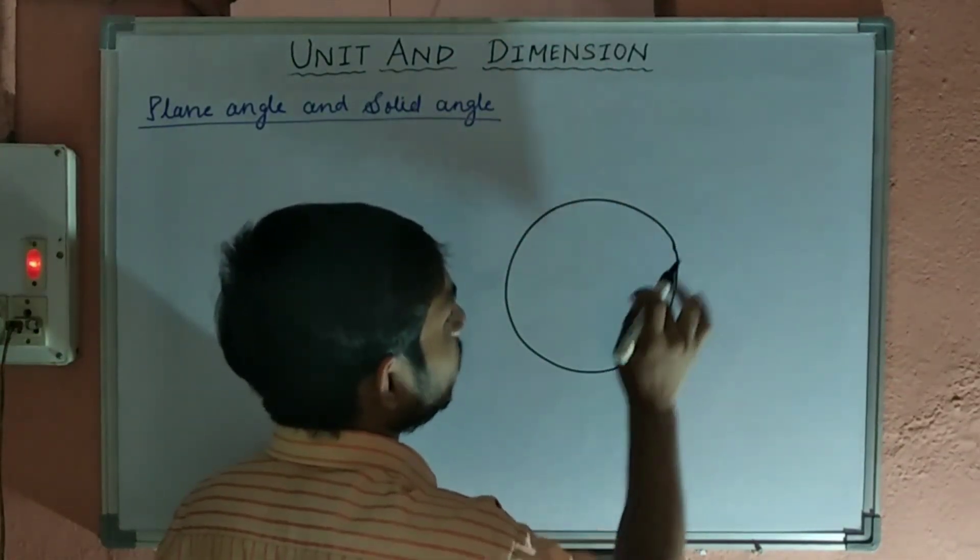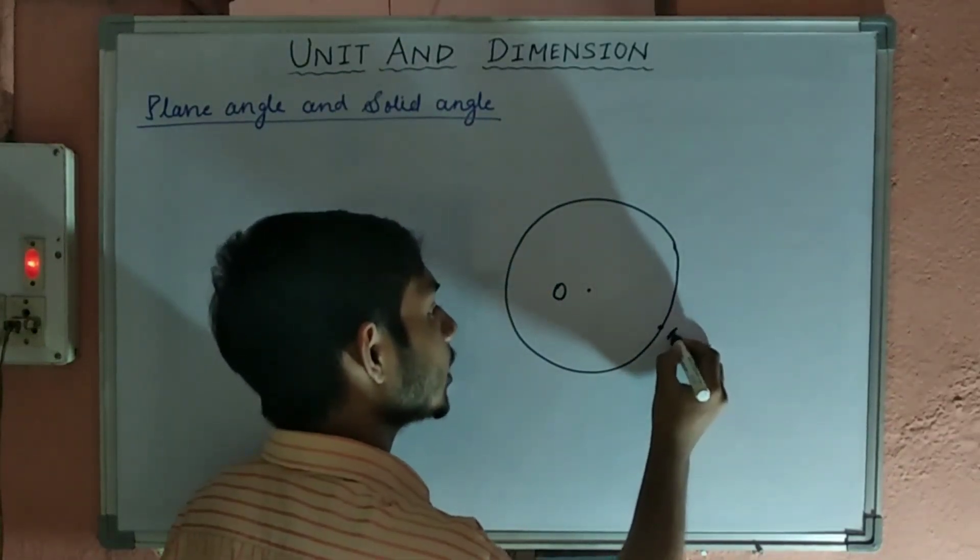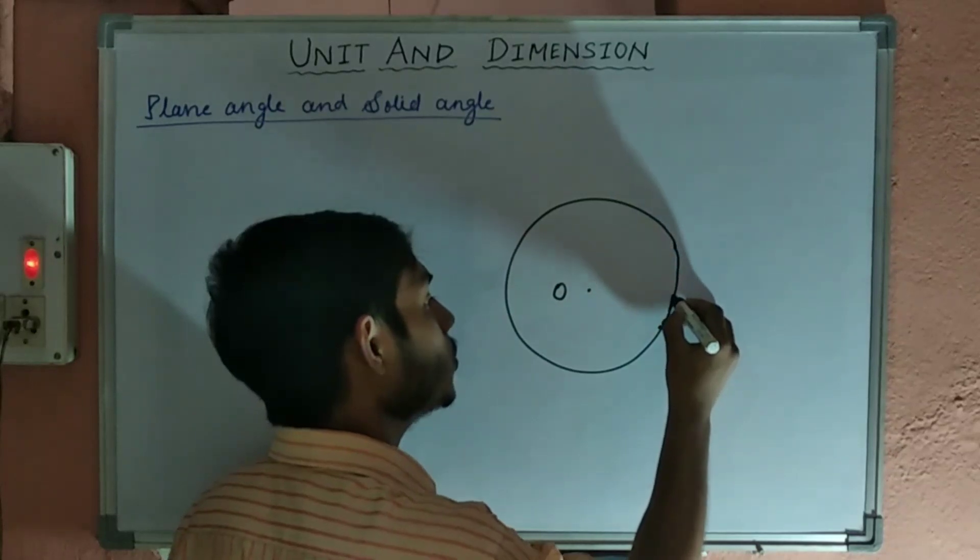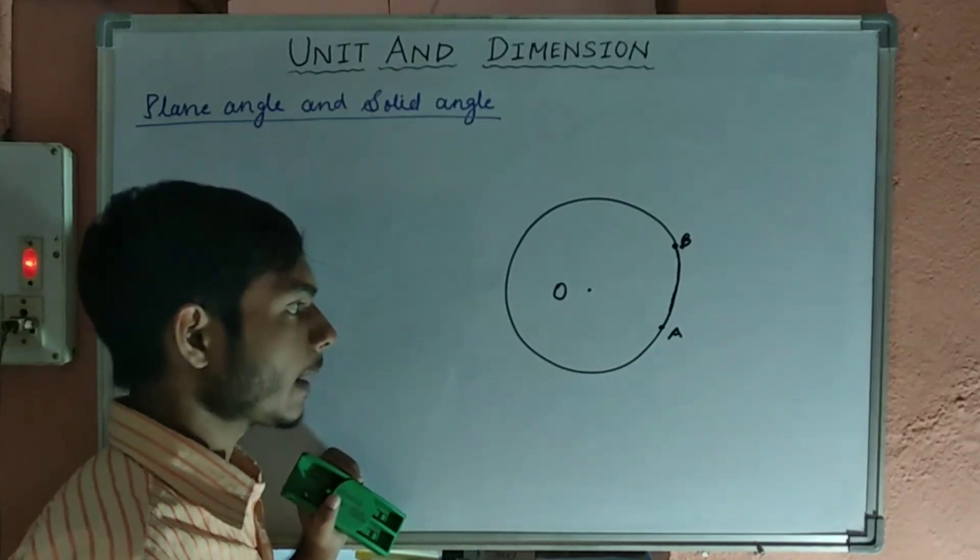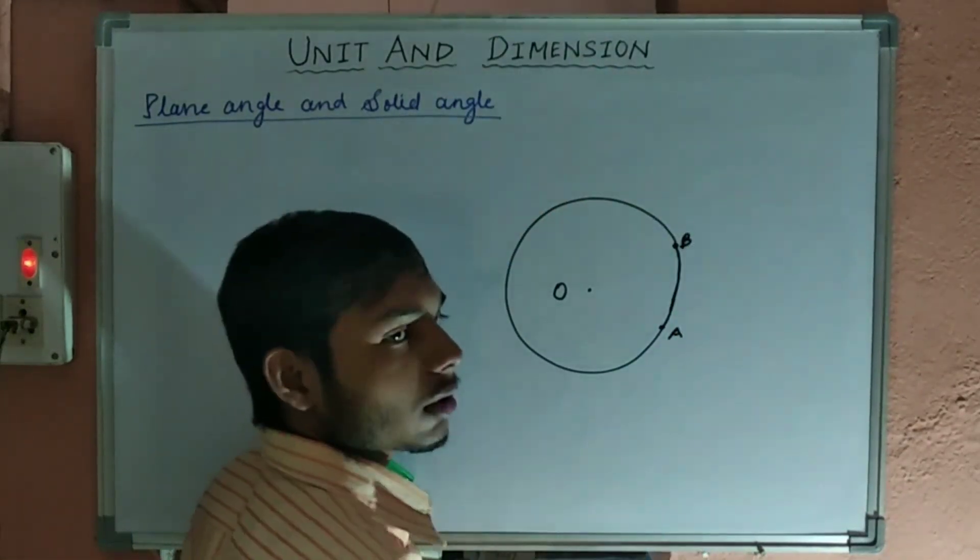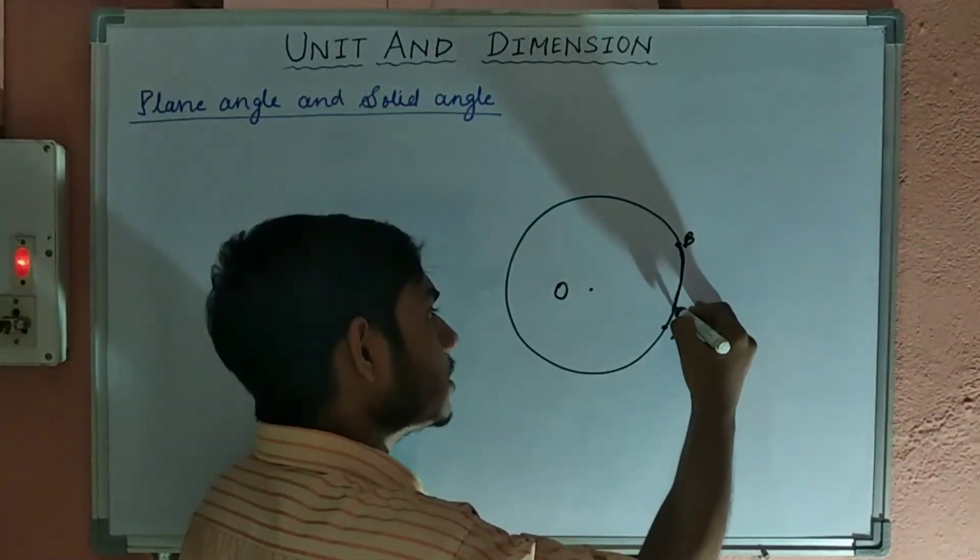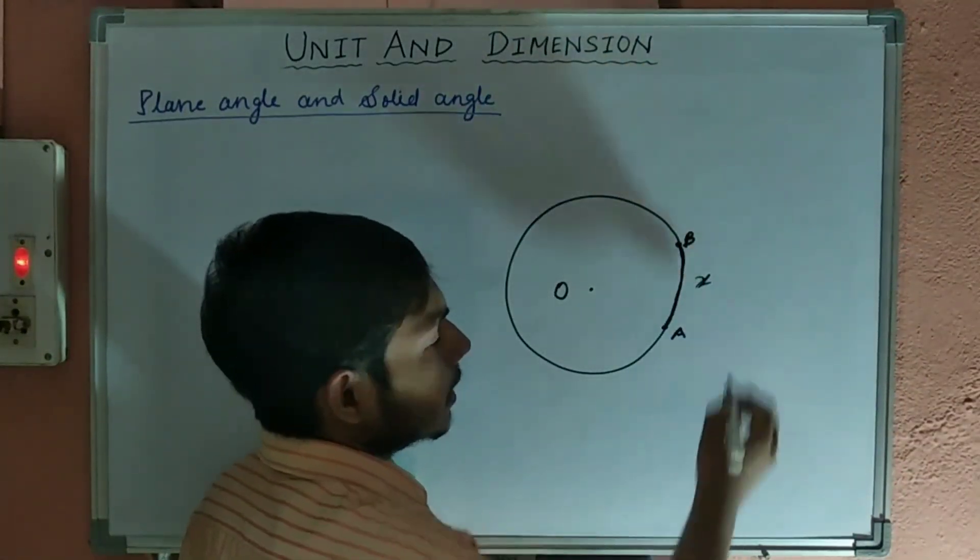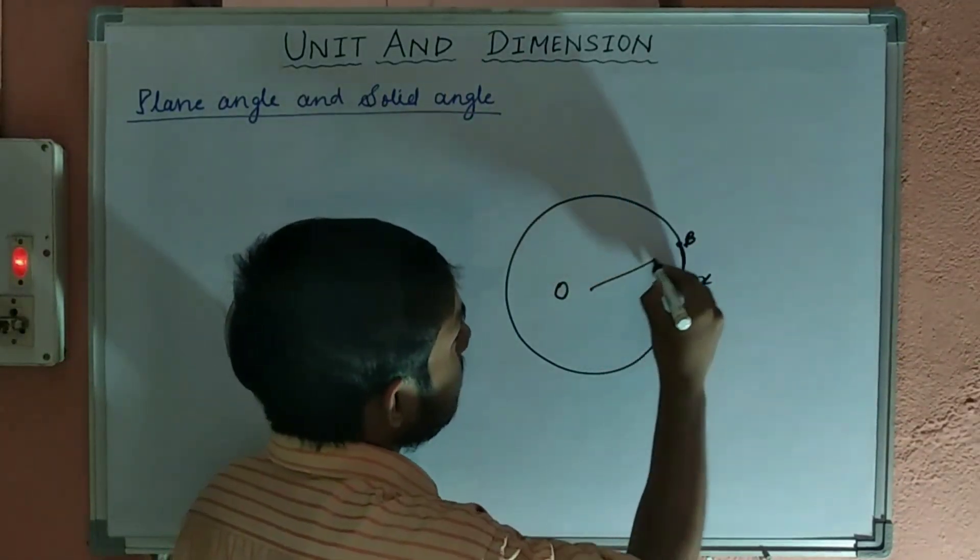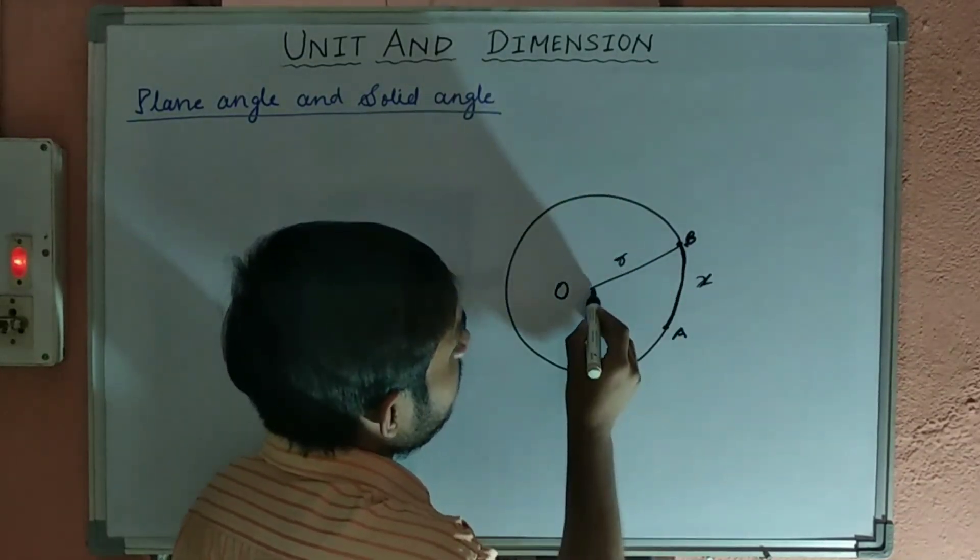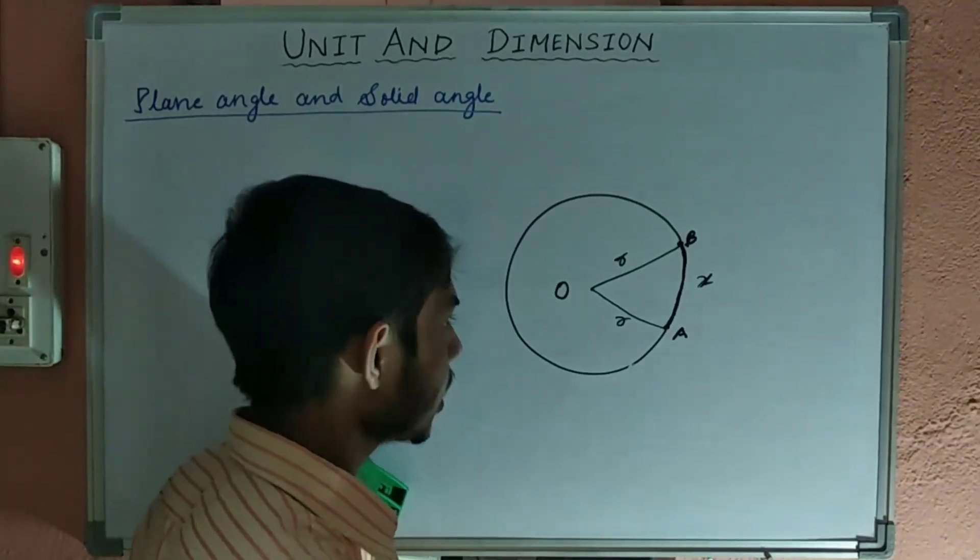This is the circular path of center O. Suppose a body starts moving from point A and up to point B. This is called the arc of the circle. This distance is x. This is the radius of the circle.